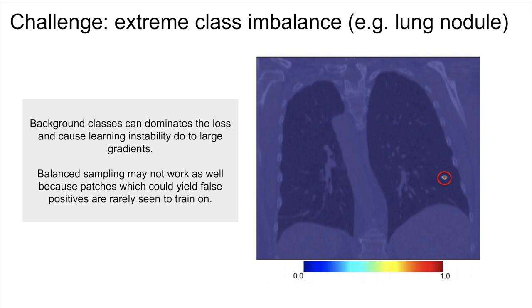Another challenge to face is extreme class imbalance, such as when trying to segment lung nodules. There can be so many different types of negative patches that a model may forget what it has already learned because it hasn't seen that type of patch just by random chance in the training process.